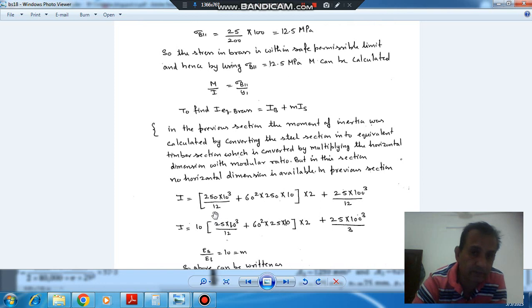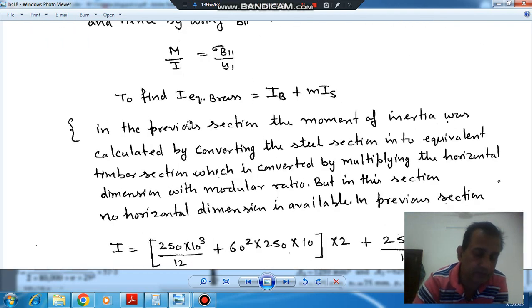In the last section, we were modifying the horizontal dimension and multiplying it by modular ratio. But in case of circular section, there is no horizontal dimension. So we are not modifying the horizontal dimension, so we will use this, I_B plus m·I_S, okay.